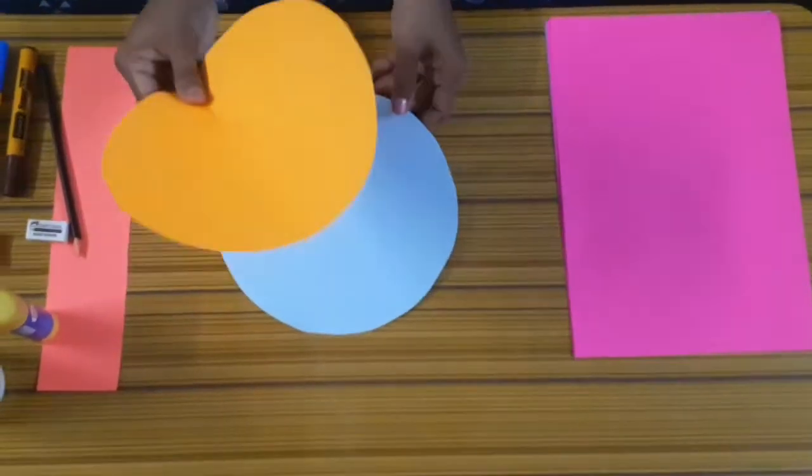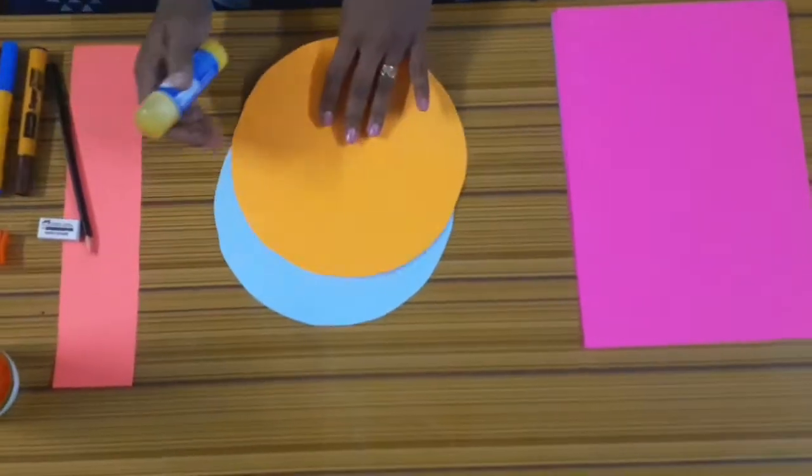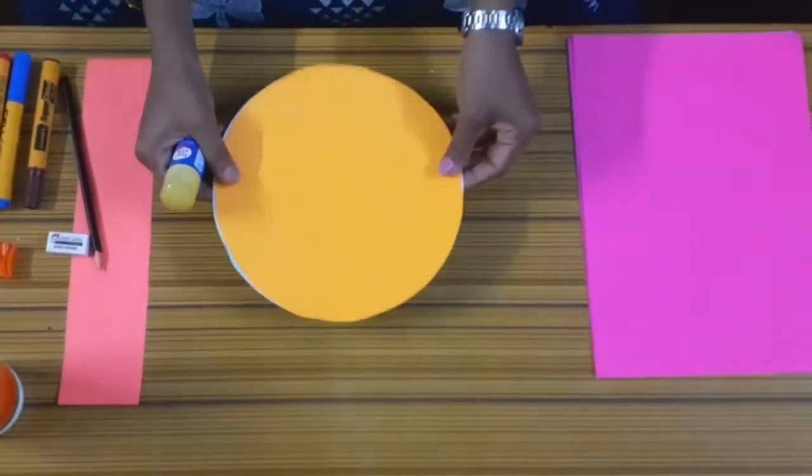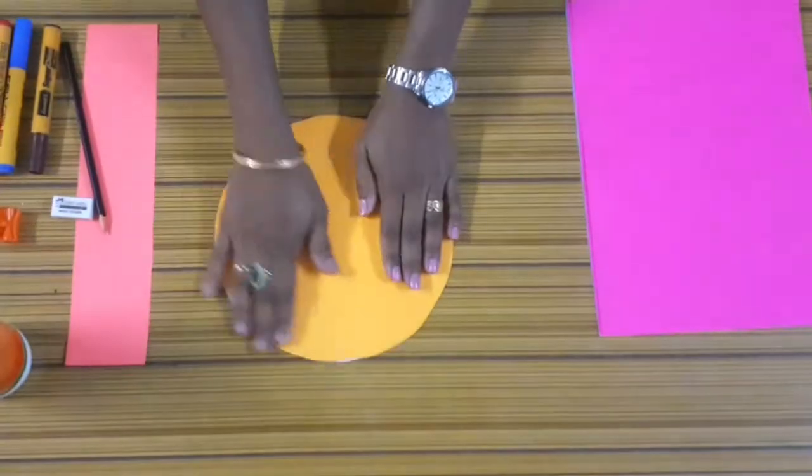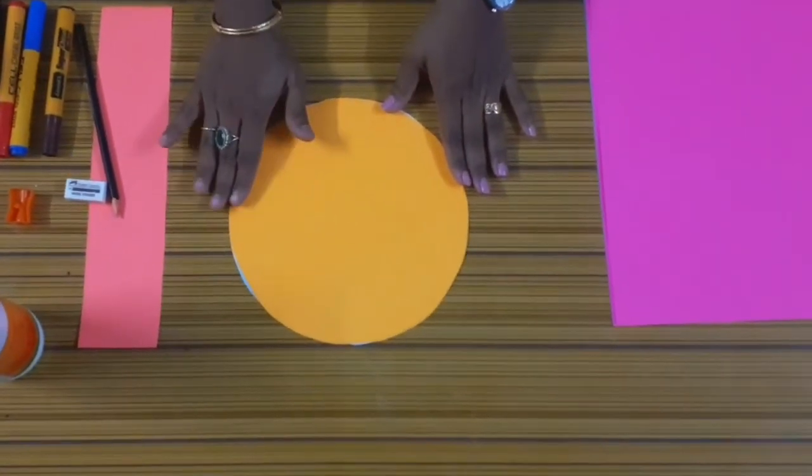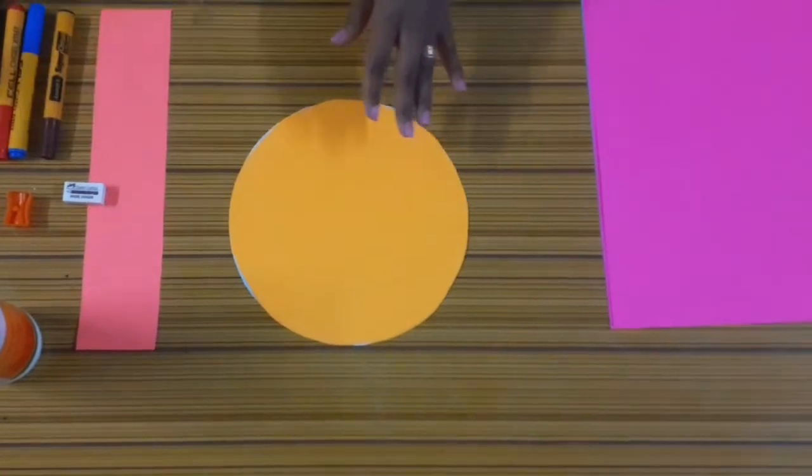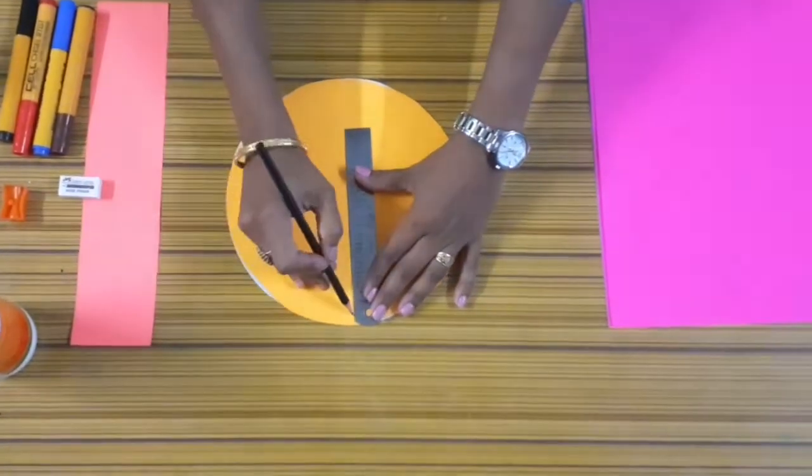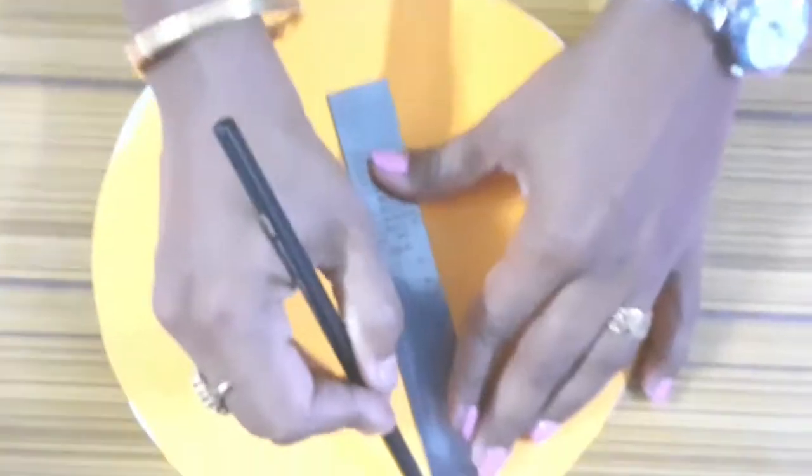Now we are going to paste this color paper over the chart. It will be thick to use. Now we have stuck the color sheet over the chart paper. Now we are going to draw lines to separate the circle in 10 parts.